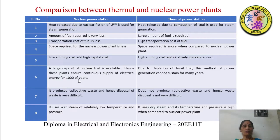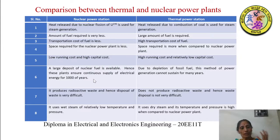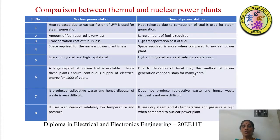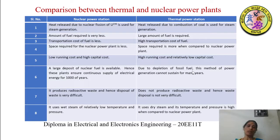Sixth: a large deposit of nuclear fuel is available worldwide, and hence these plants ensure a continuous supply of electrical energy for thousands of years, so we need not worry about availability. In contrast, fossil fuels took millions of years to form, and with continued use, the deposits are decreasing — therefore, you cannot use fossil fuels for many years compared to nuclear fuel.